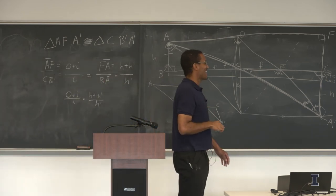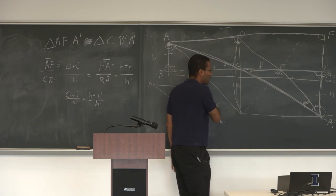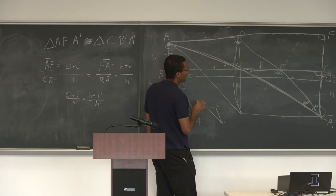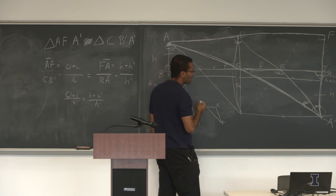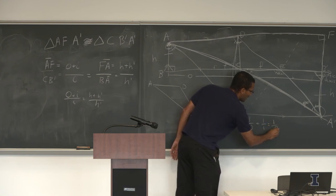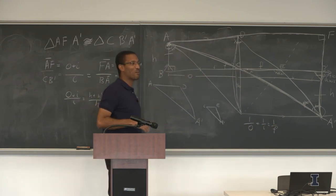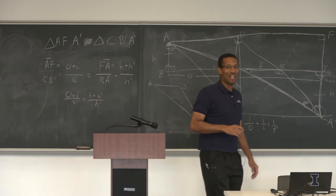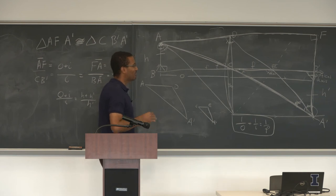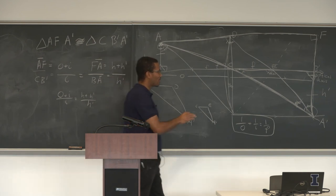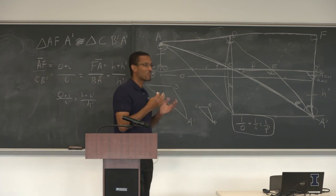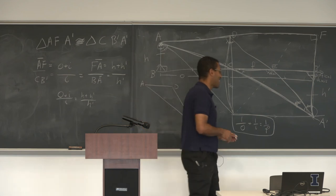The equation we eventually want to derive is: one over O plus one over I equals one over F. I need a second pair of similar triangles that include the focal length F, combined with the magnification relationship already derived. I'll record a clean version of this derivation separately. The result we want is 1/O + 1/I = 1/F.